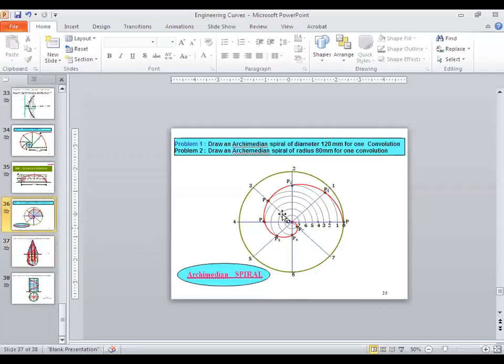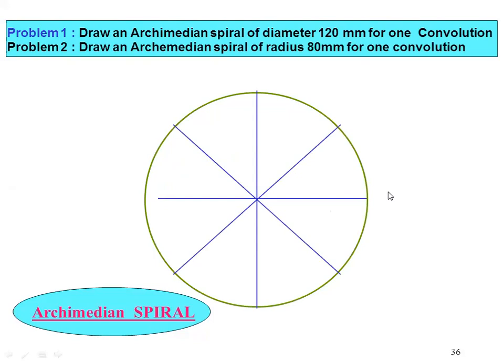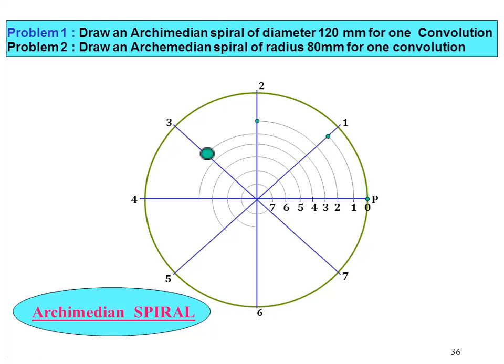We will revise it quickly. Circle drawn, eight parts divided, naming done, then the radius is also divided into eight parts with naming, point one, point two, and then all points are marked. From each point, we draw a smooth curve.